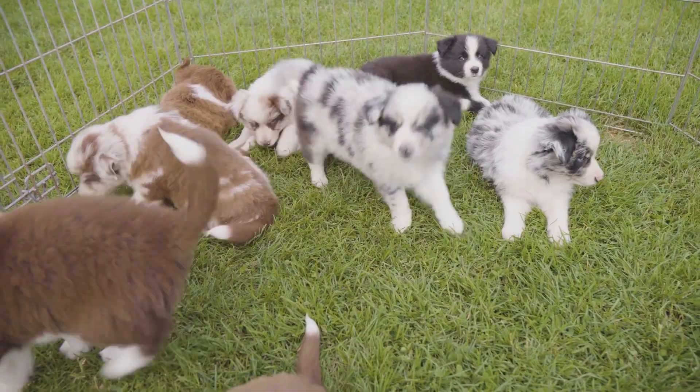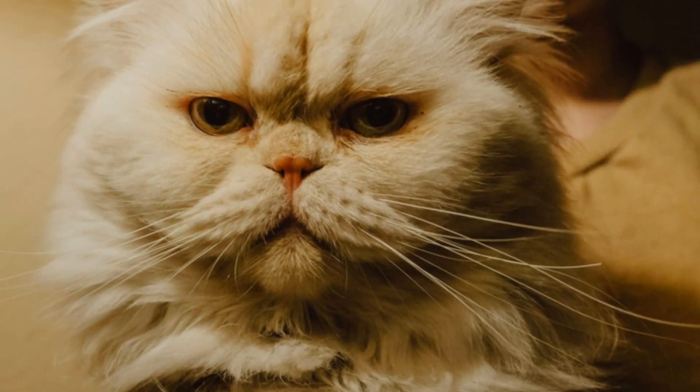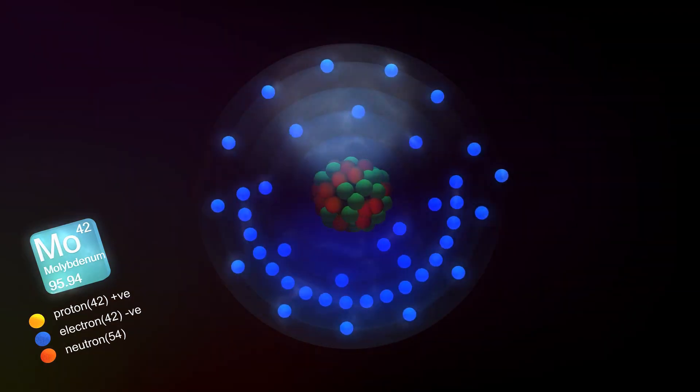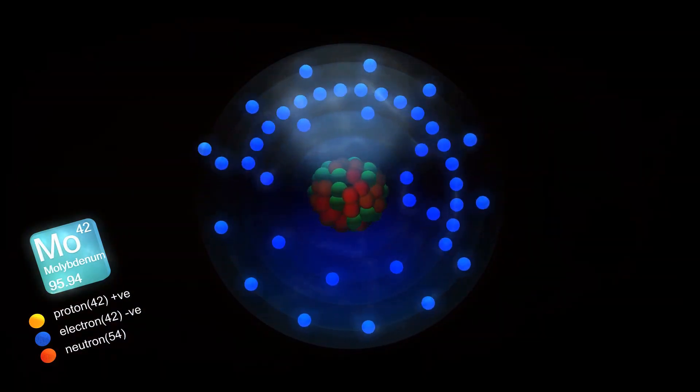Think of positive charges like enthusiastic puppies and negative charges as grumpy cats. Normally, atoms have an equal number of these charges, making them neutral.